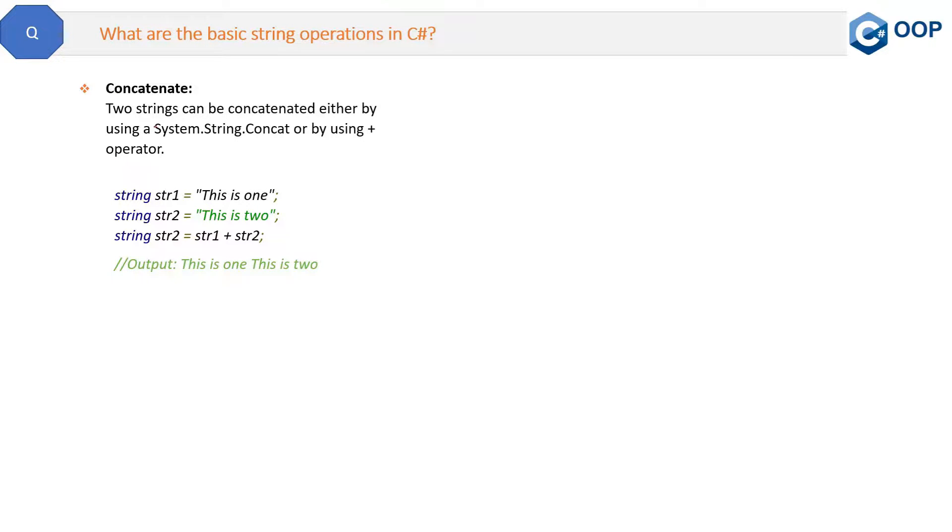What it does is it will add two strings and show you the result and output like this. Two strings can be concatenated either by using System.String.Concat or by using the + operator. Here we have string str1 and string str2. In str2, we are adding str1 + str2, which will give this output: 'This is one' and 'This is two'. So this is the Concatenate method of the string class.